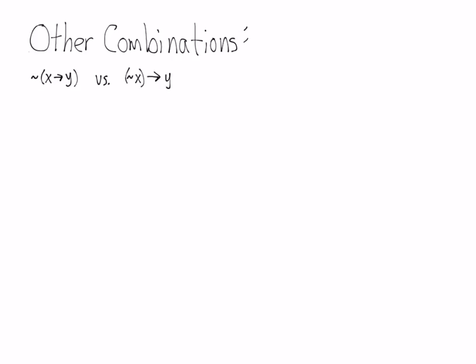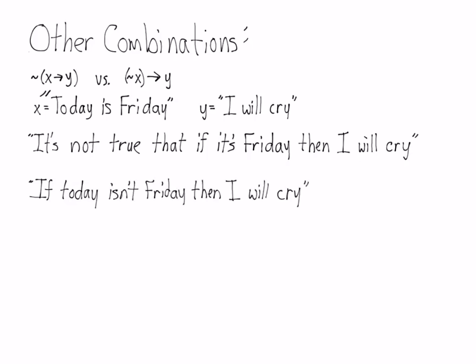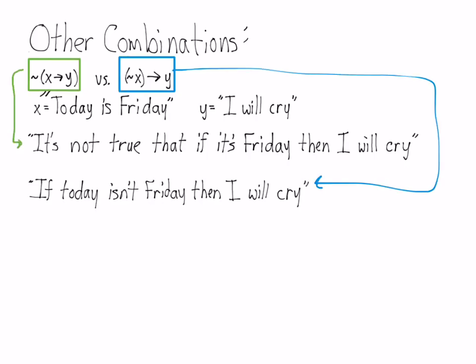Here are some more combinations of connectives. When you have a negation and a conditional, you have a couple of different situations. If x stands for 'today is Friday' and y stands for 'I will cry,' you can have one sentence which says 'it's not true that if it's Friday, then I will cry.' This means 'I don't cry on Fridays.' Another sentence is 'if today isn't Friday, then I will cry,' which means 'I do cry on days that aren't Friday.' Each one of those statements matches up with one of the logical notations.